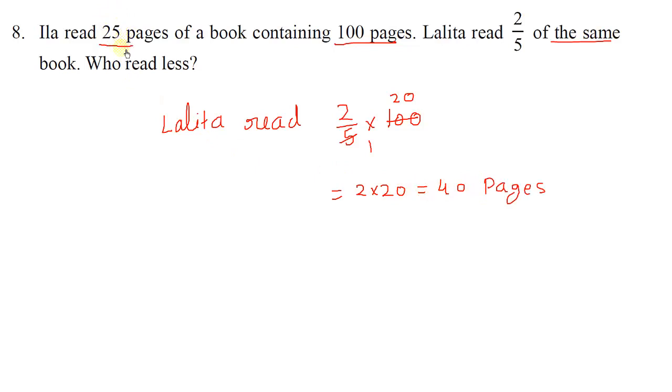Here 20, so 2 times 20 equals 40 pages. Ila is reading 25 pages and Lalita is reading 40 pages. So who is reading less? The question asks who read less, who is reading the least. So the least is Ila. The answer is Ila has read less.